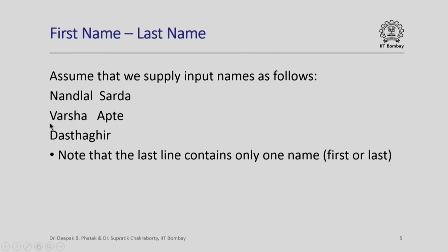Now this has just one blank in between the first name and second name. Look at the second set: Varsha blank blank blank Apte. So there are more spaces between the first name and the second name. Third one is still very different: Dashtagir. It has no second name. So the last line that is shown as a sample input contains only one name. We do not know whether it is first or last, but whatever it is, the line has only one name given.